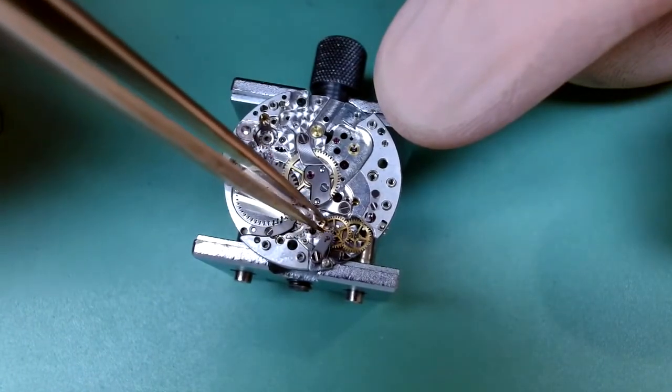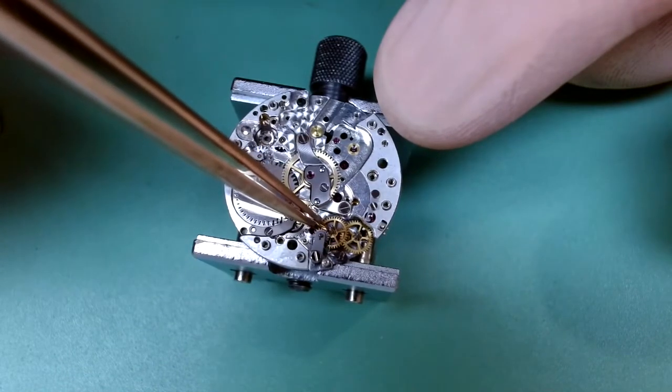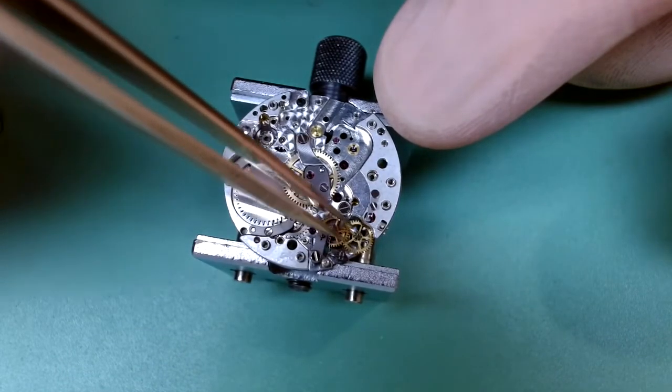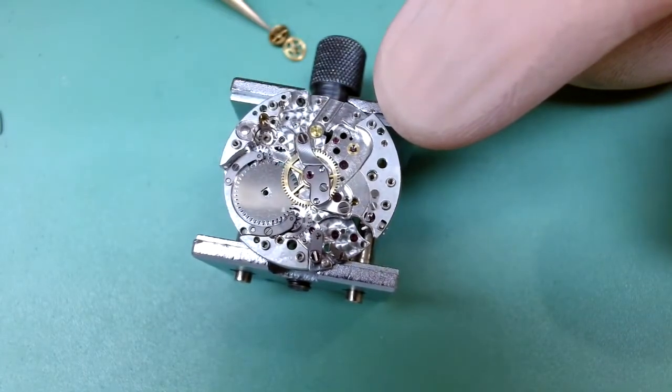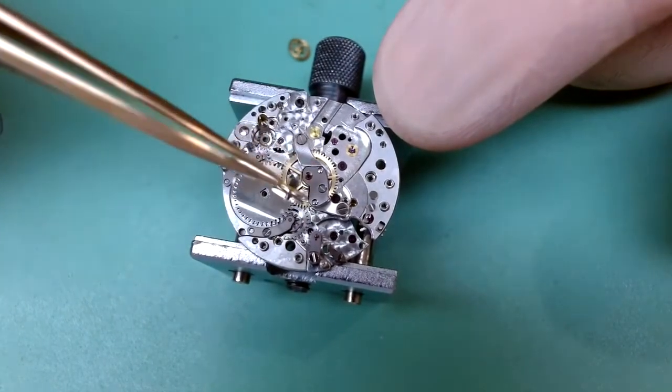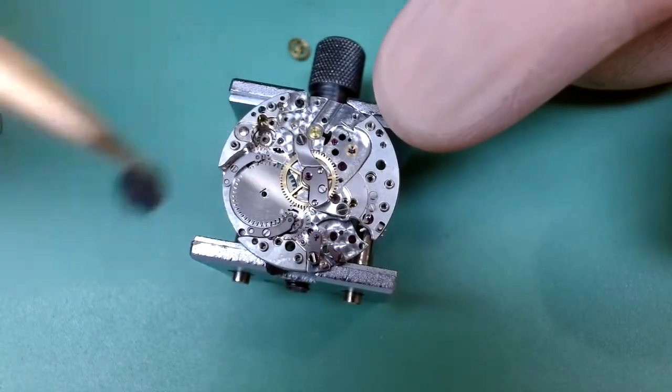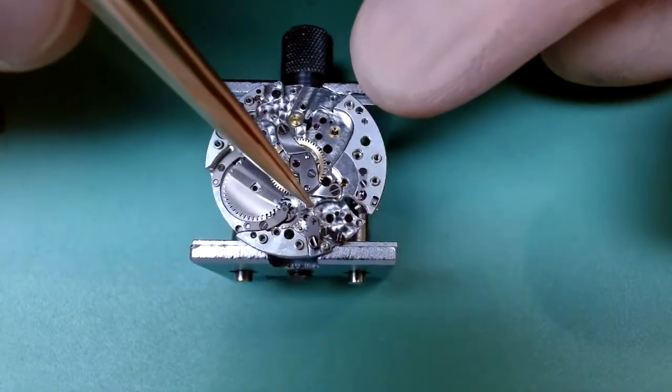And if we follow the gear train, remove this wheel first—those two have come out together—it's certainly an interesting doubled coaxial wheel there.